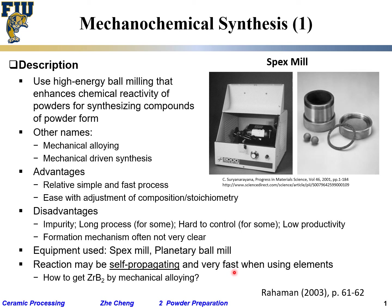Let's consider an example: how to make zirconium diboride (ZrB₂). 'Di' means two, so diboride means a boron compound with two boron atoms. To make zirconium diboride by mechanical alloying, you start with zirconium powder and boron — a metalloid or semimetal — powder.